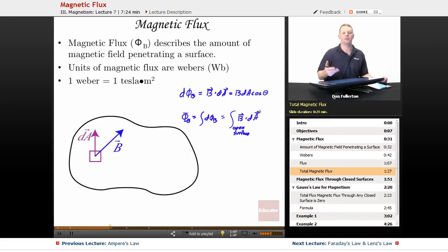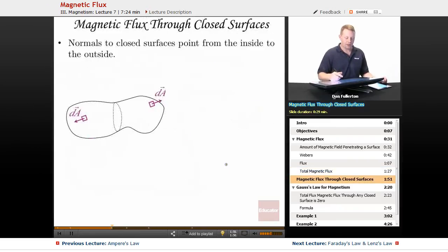Same thing as we did with electric flux: when we talk about magnetic flux through closed surfaces, the normals still point from the inside to the outside. So now our total magnetic flux would be the integral of dφ_B, which is the integral over the closed surface of B·dA, which for magnetic flux equals zero. Let's talk about that.